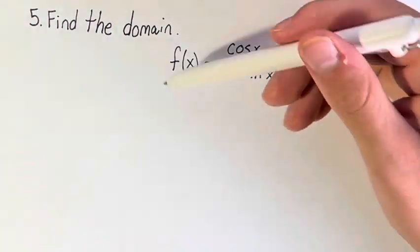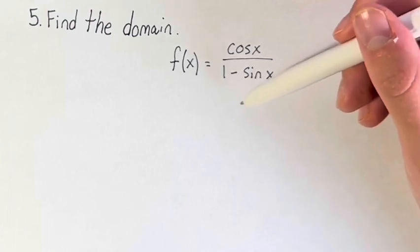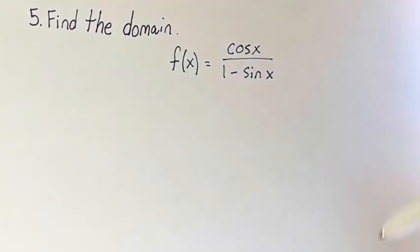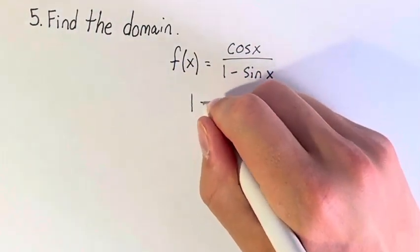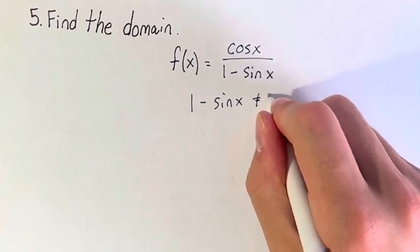So the only way we can have an invalid input for this function is if the denominator is equal to 0. The cosine function, the sine function, they can take any value so this is the only restriction. 1 minus sine of x cannot equal 0.